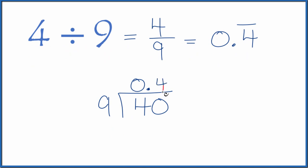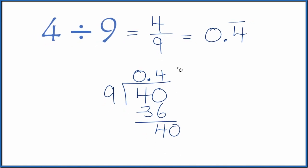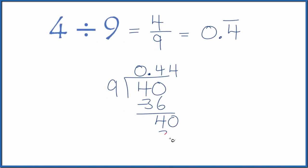Now 4 times 9, that's 36. We subtract and we get 4. Let's make this 40. So 4 times 9, 36.